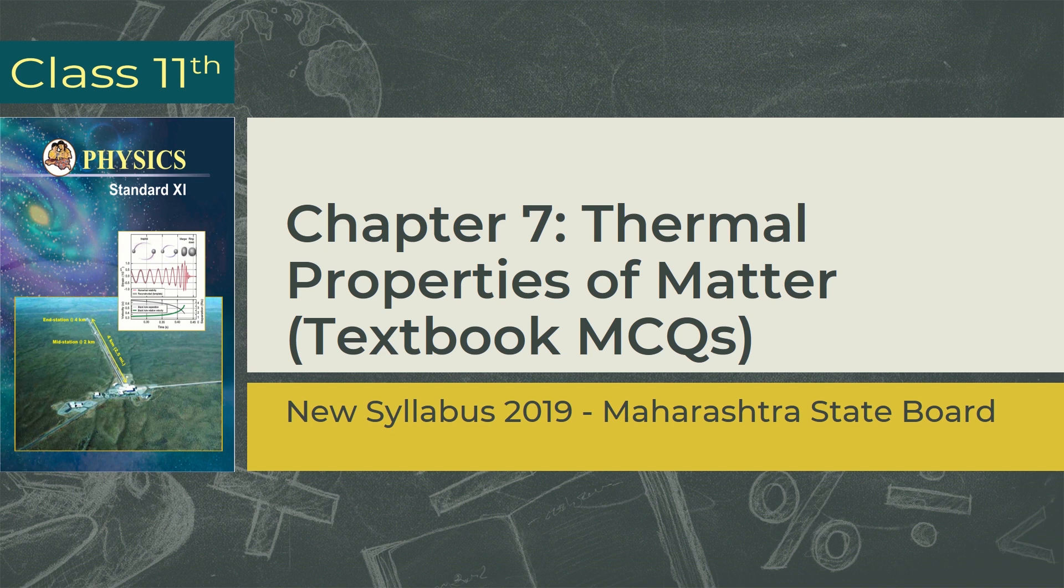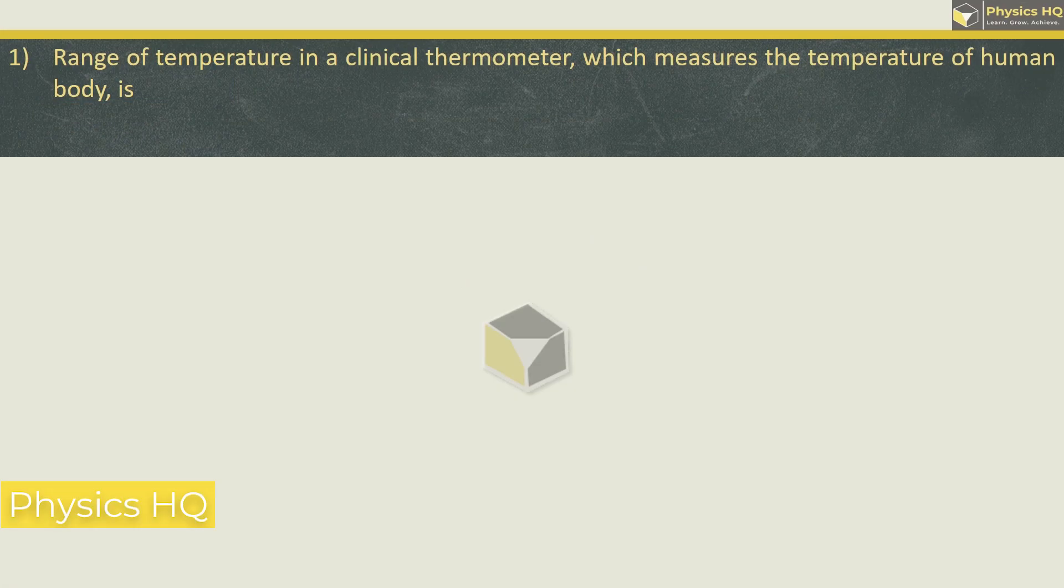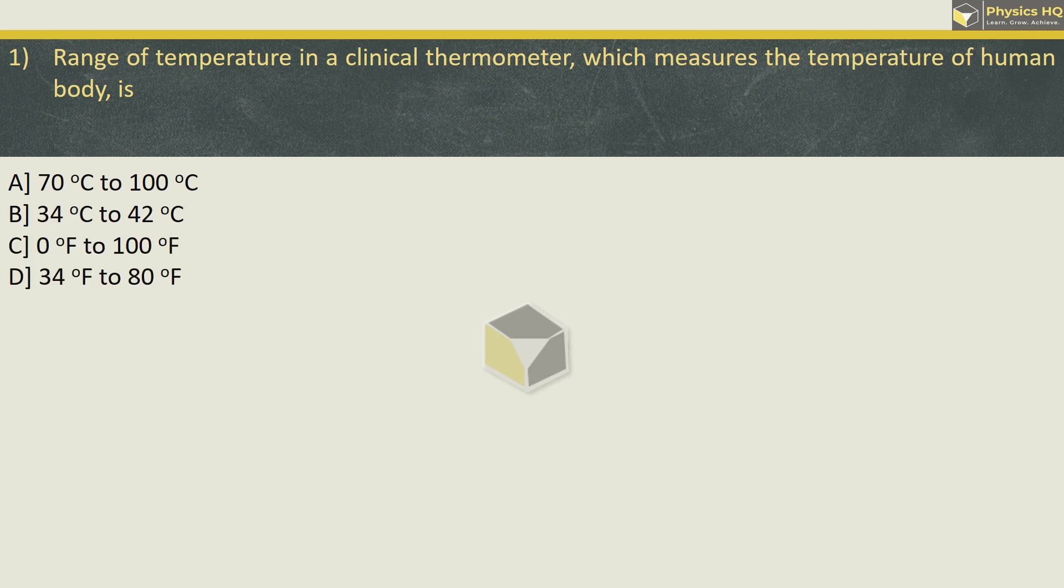Let us start with the first MCQ. The range of temperature in a clinical thermometer which measures the temperature of human body is: the correct range is Option B, 34 degree Celsius to 42 degree Celsius. Normal body temperature is 37, so this range of thermometer is used.